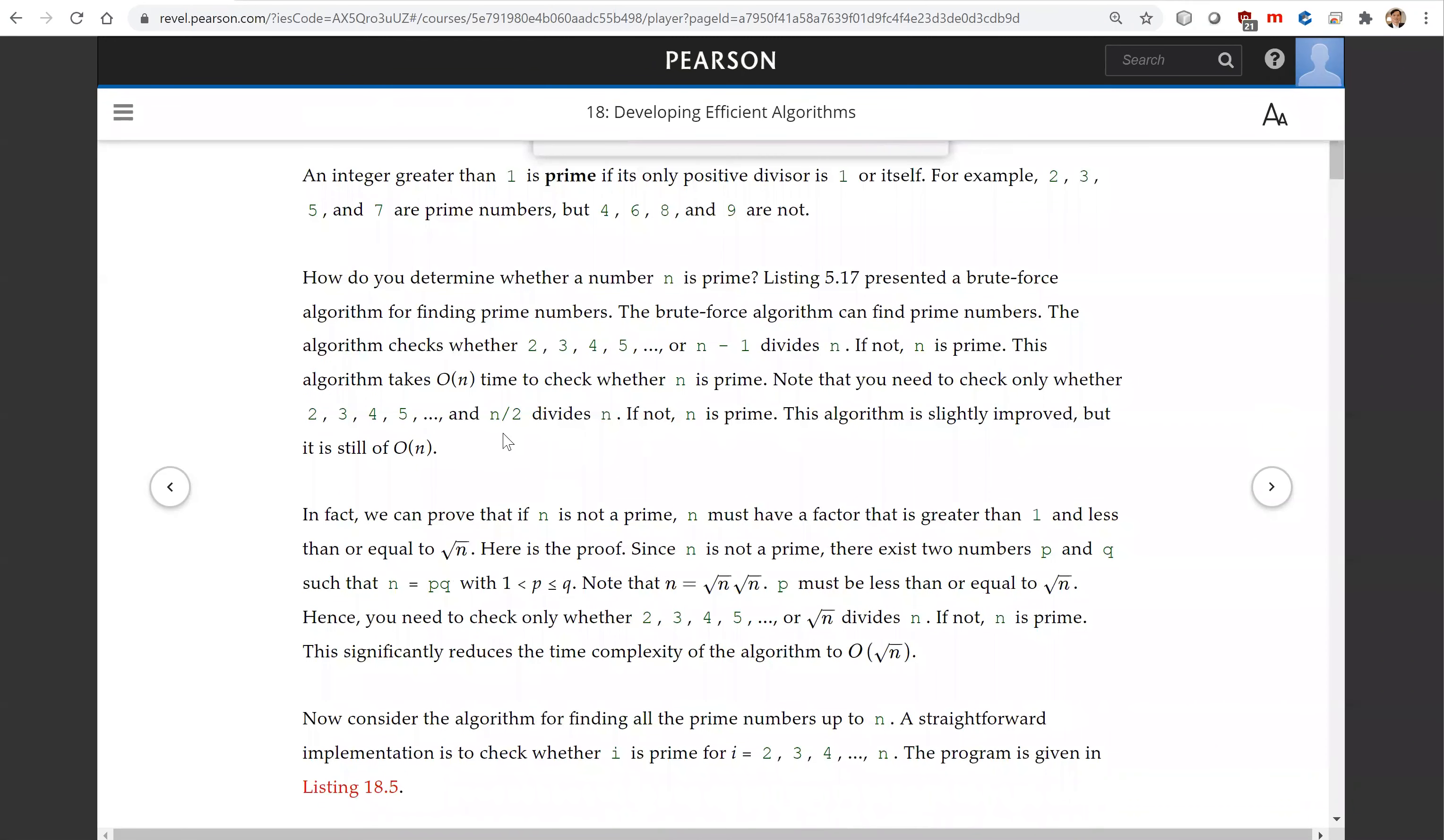Further, we don't even have to go to n divided by 2. All we need is to go to square root of n. The reason is that we can prove that if n is not prime, n must have a factor greater than 1 and less than or equal to square root of n.